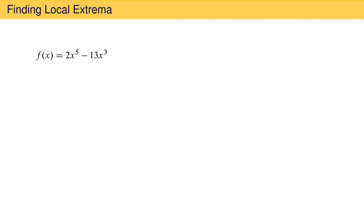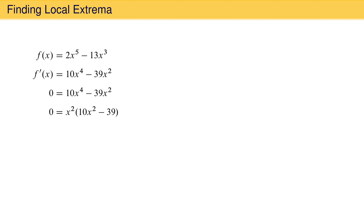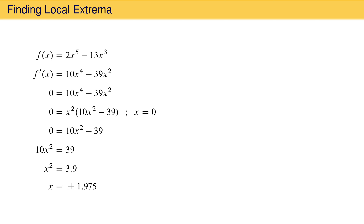Using these criteria, it is easy to find the local extrema of our example function and to identify them as local minima or maxima. We start by finding the function's first derivative, which is 10x to the fourth minus 39x squared. We set this equal to zero and solve for the x values that give critical points. Factoring out x squared leaves 10x squared minus 39 in parentheses. Setting x equal to zero produces one critical point. Additionally, setting the parenthetical expression to zero and solving gives x squared equal to 3.9. Taking the square root gives two additional critical points: x equal positive and negative 1.975. There are three critical points: one at x equal to zero, one at positive 1.975, and one at negative 1.975.